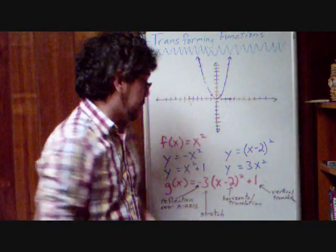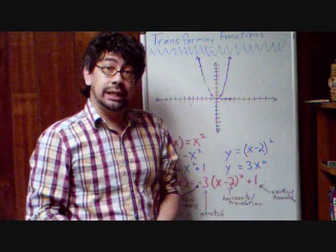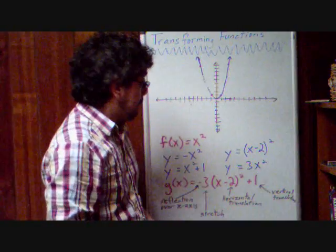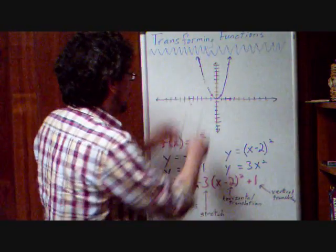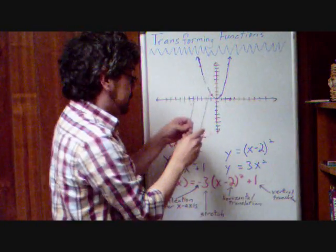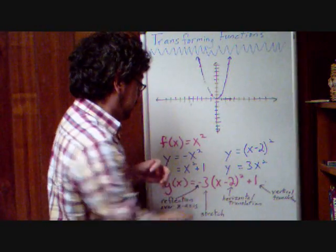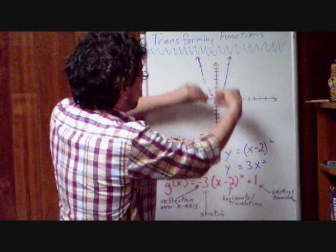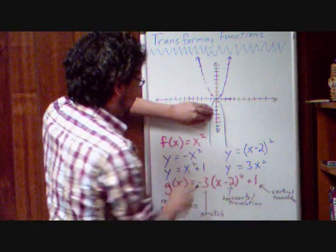Now let's combine them all together to get this g of x equals negative 3 times the quantity of x minus 2 squared plus 1. Okay? So I already did my stretch. I want to do my reflection, so I'll just flip it over.